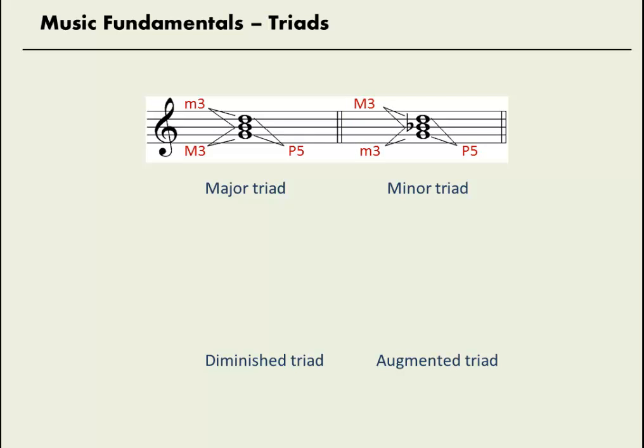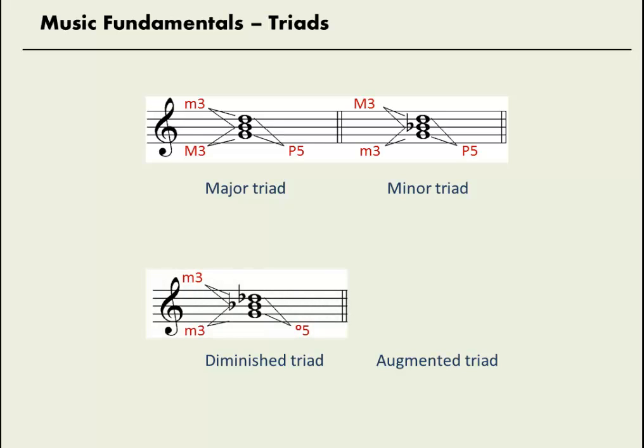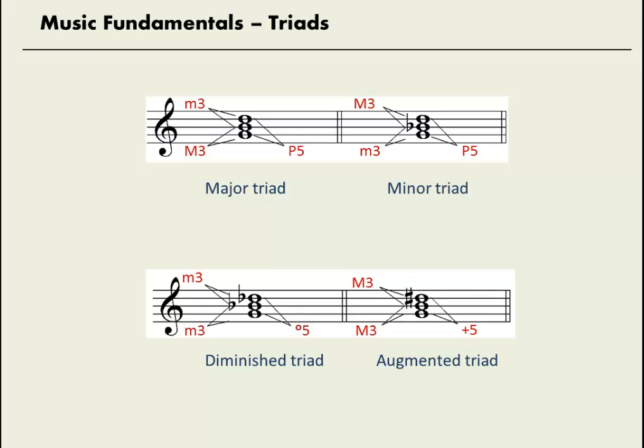The minor triad reverses the pattern with the minor third on the bottom, the major third on top, and the outer interval is still a perfect fifth. Diminished triads have two minor thirds with a diminished fifth between the root and the fifth. And an augmented triad is made up of two major thirds with an augmented fifth between the root and fifth.